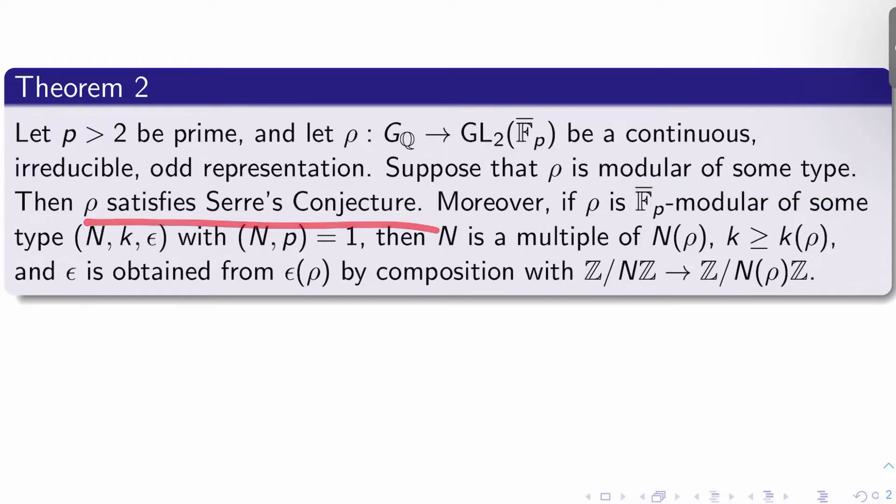Then ρ satisfies Serre's conjecture, so it's modular of the type prescribed by Serre's conjecture. Moreover, if ρ is F_p_bar modular of some type (N, k, ε) and N, p are coprime, then...